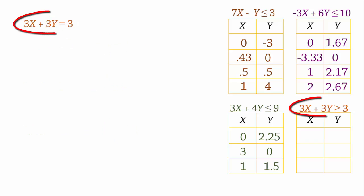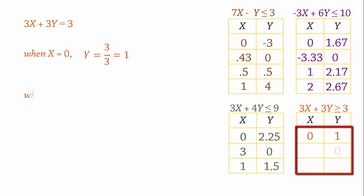And finally, for constraint 4, we have the line 3x plus 3y equals 3. So when x equals 0, y equals 1. And when y equals 0, x equals 1. And that should do it for that constraint.